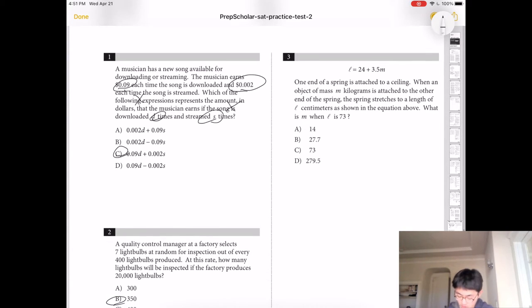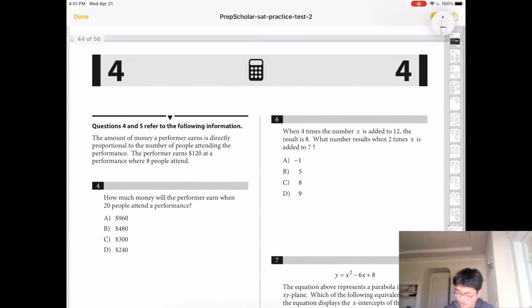Number 3, what is M when L is 73? 73 equals 24 plus 3.5 N. So 49 equals 3.5 N. So I'm just going to use my TI-84 here, and I'm going to put in 49 divided by 3.5 to get 14. So the answer is 14.